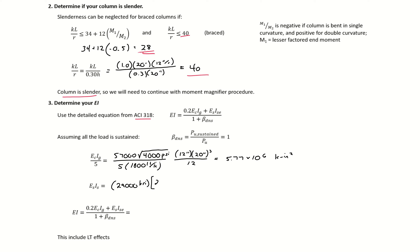For us we have two layers of three number 9 bars. There's our A component, then we need our d squared component. These bars are 10 inches minus 2.5 inches away from the centroid of our section, then squared. This gives us an E_s*I_s component equal to 9.79 times 10^6 kip-inches squared.